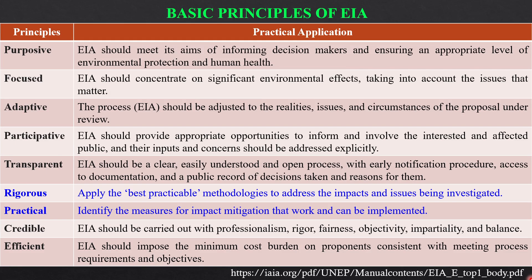The first principle is purposive — EIA should meet its aim of informing decision makers and ensuring an appropriate level of environmental protection and human health. Second is focused — EIA should concentrate on significant environmental effects, taking into account the issues that matter. Third, the process — EIA should be adjusted to the realities, issues, and circumstances of the proposal under review. Fourth is participative — EIA should provide appropriate opportunities to inform and involve the interested and affected public, and their inputs and concerns should be addressed explicitly.